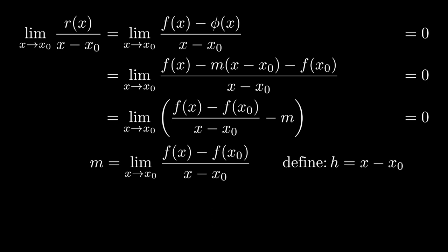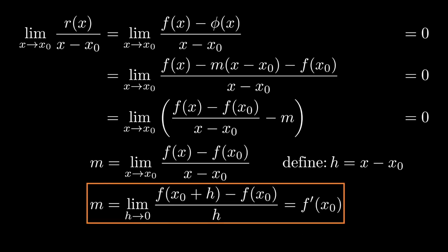Let's also define the quantity h to be the difference between x and x0. When we write the limit in terms of h we see our familiar definition for the derivative at x0. So we can think of the derivative as being the slope of the optimal affine approximation at a given point x0.